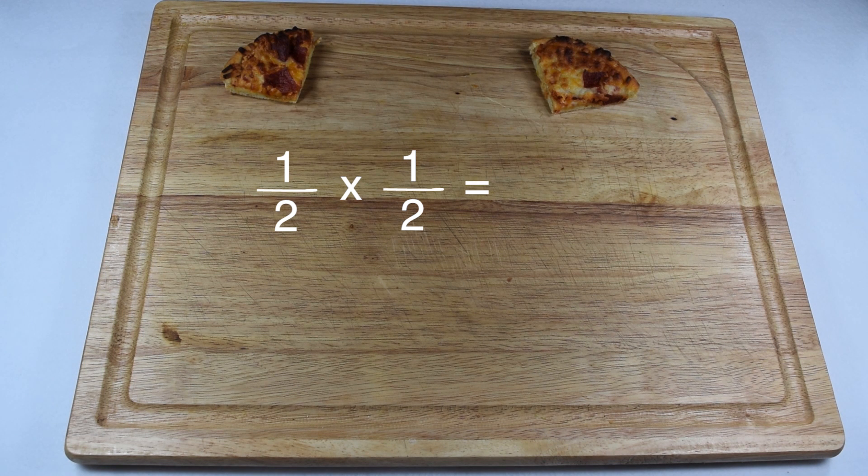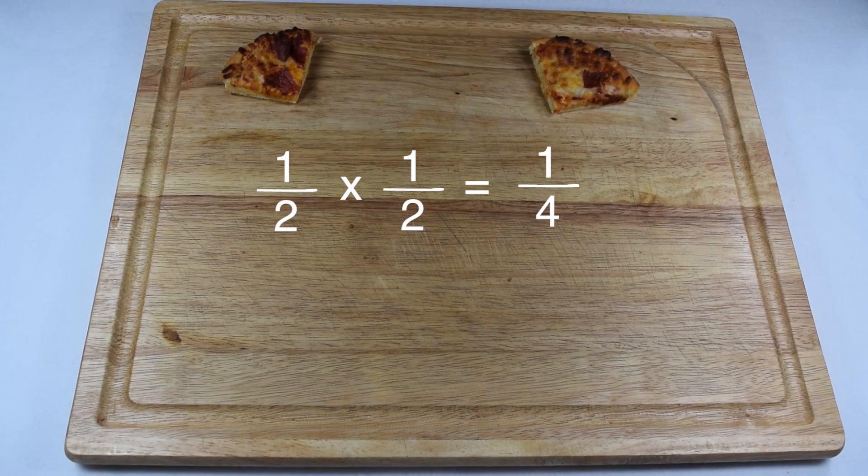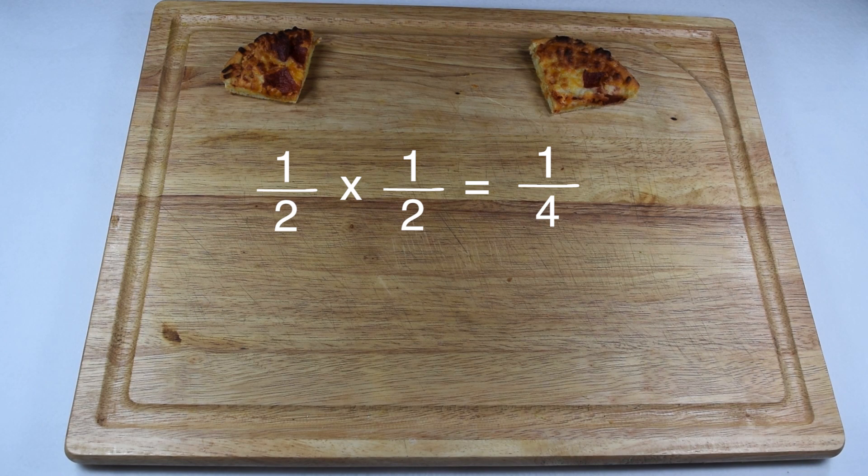Now we can follow our rules for fraction multiplication. Multiplying our numerators, one times one gives us one. Multiplying our denominators, two times two gives us four. This means whether we set it up by actually cutting pizza or solving the division problem, each person gets one fourth of the whole pizza.